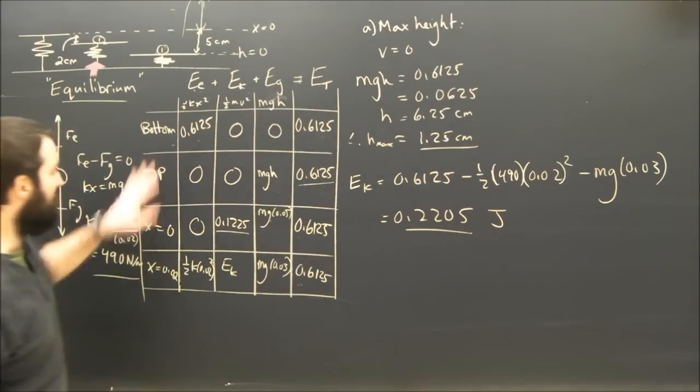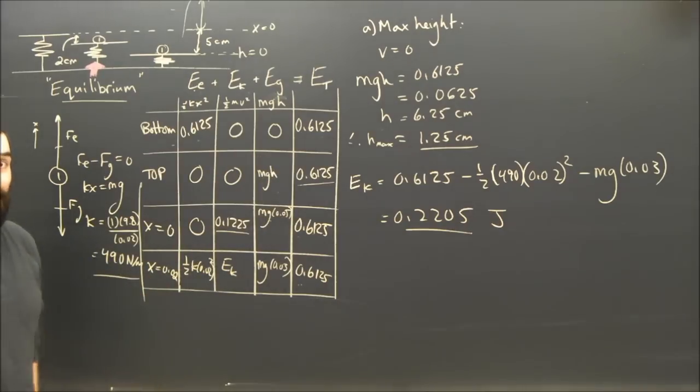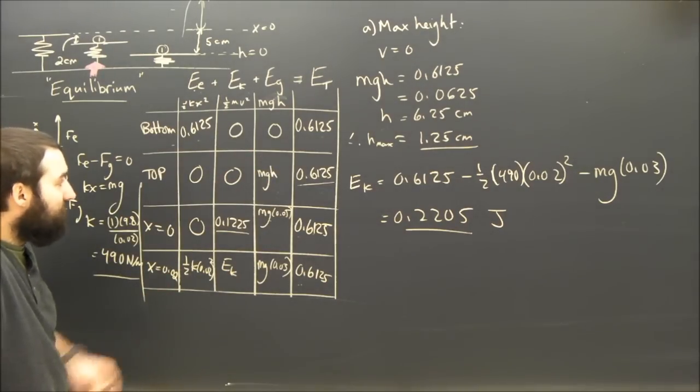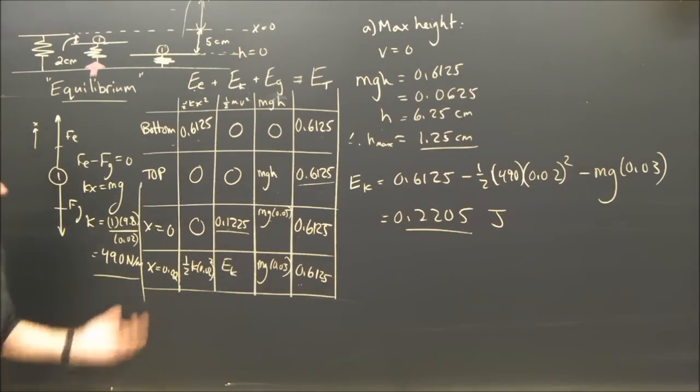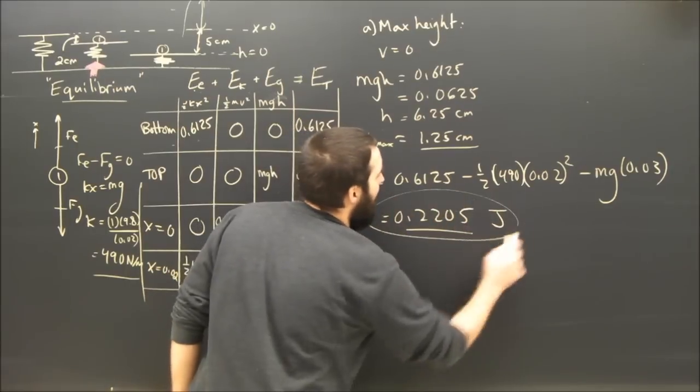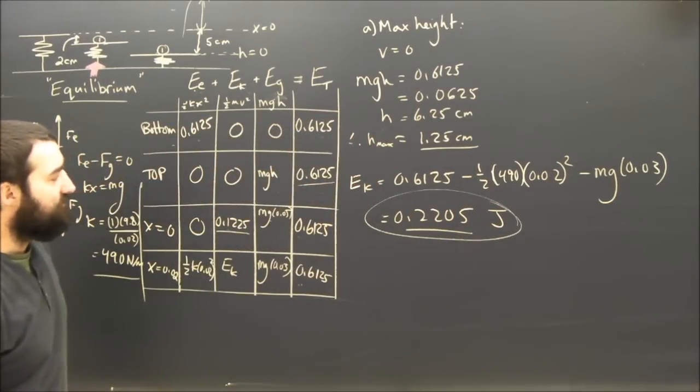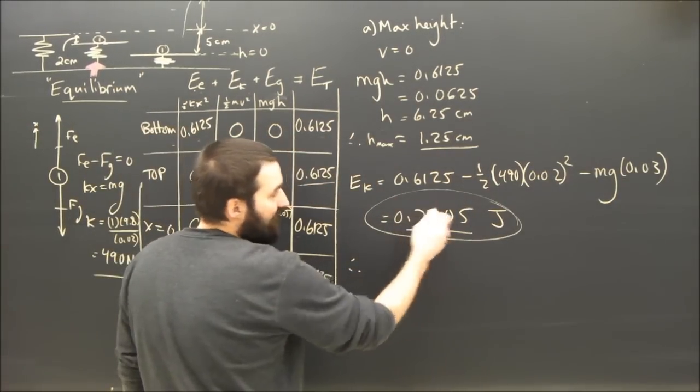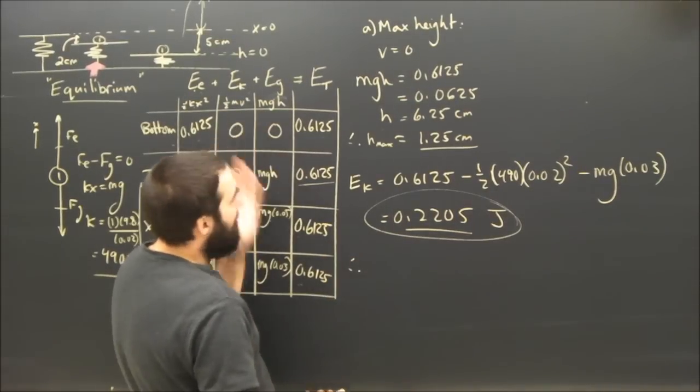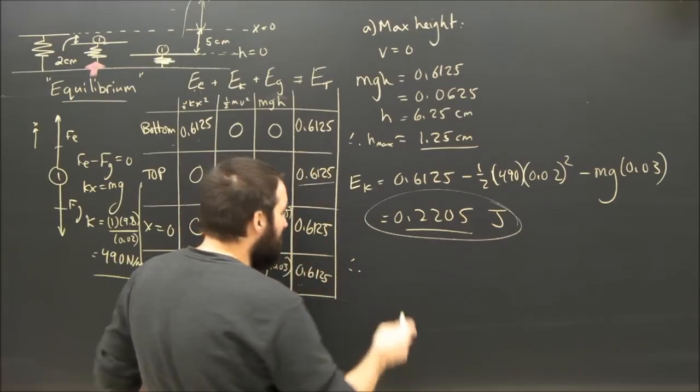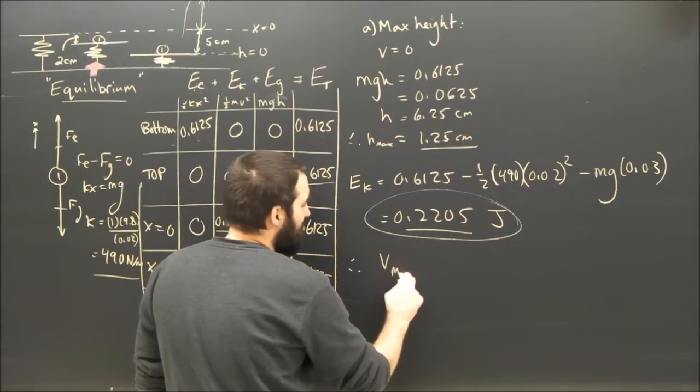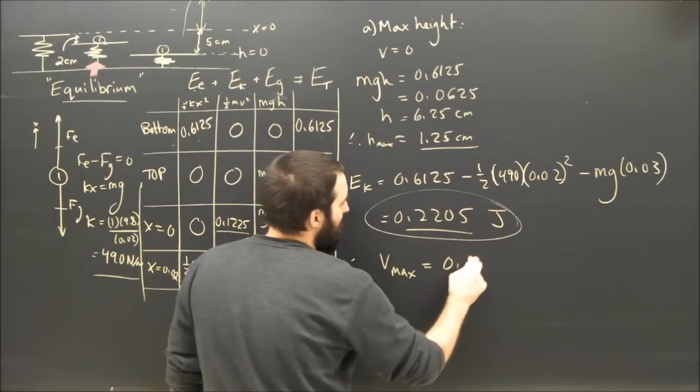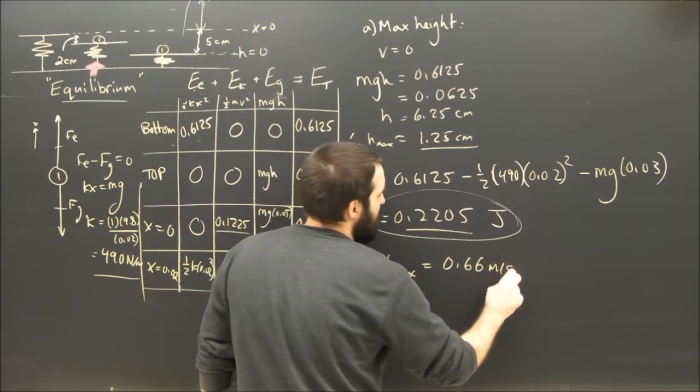And when we work all that out, we end up with a bigger number, I believe, 0.22. This is all energy, so it's in joules. All the numbers in my chart are in joules here. So I can see, in fact, that's greater than 0.1125. So this number is the number I'm going to use to find the V max. This is the kinetic energy. The kinetic energy is a half MV squared. Hopefully you can do the math yourself. Times 2 divided by 1 square root. Therefore, we should end up with a maximum speed of about 0.66 meters per second.